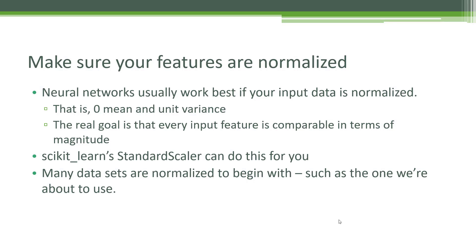For example, if you create a neural network that tries to classify people based on their age and their income, age might range from zero to 100, but income might range from zero to a million — those are wildly different ranges and will lead to real mathematical problems if not scaled down first. Fortunately, the Python scikit-learn library has a StandardScaler package that you can use to do that automatically with just one line of code. Many data sets you use while researching are going to be normalized to begin with, and the one we're about to use is already normalized, so we don't actually have to do that.